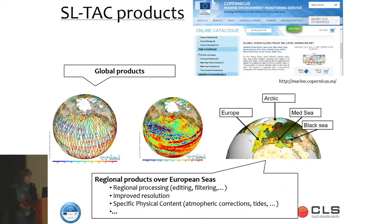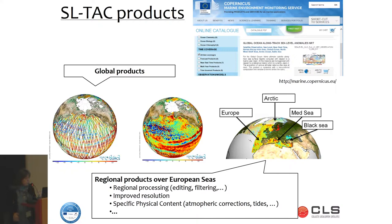We have global products, either along-track and gridded. For now, the gridded data are internal products, but in one month there will be external products. We also have regional products over the European seas — the Europe region including the IBI area, Arctic, Mediterranean Sea, and Black Sea — with specific content and specific processing applied.